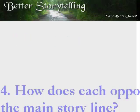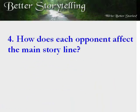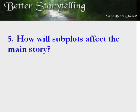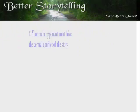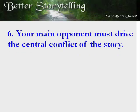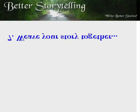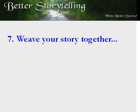Step 4: How do each of the opponents affect the main story goal? Step 5: If you have a subplot like a love story, how will it affect the main story? Step 6: Make sure that your main opponent drives the central conflict of the story while the secondary opponents increase conflict by fighting against each other as well as the hero. Step 7: Weave your story together, hitting each beat of the seven steps of classical story structure with each opponent.